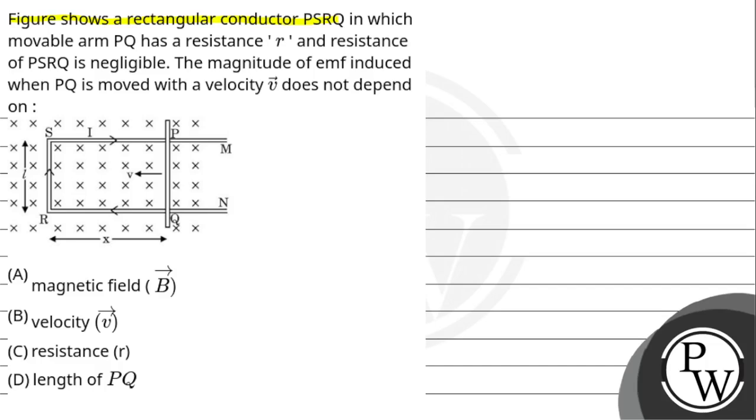Figure shows a rectangular conductor PSRQ in which movable arm PQ has a resistance R and resistance of PSRQ is negligible.